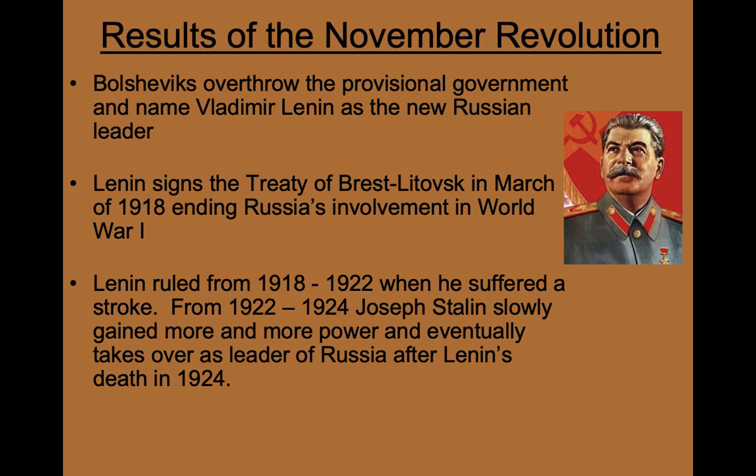Lenin would continue to rule Russia for the next four years from 1918 until 1922. During this period, Russia underwent a civil war where people who were still loyal to the Tsar and to the provisional government attempted to prevent the Bolsheviks from fully taking over the country.